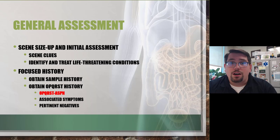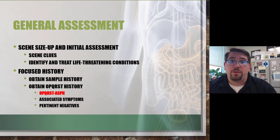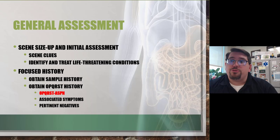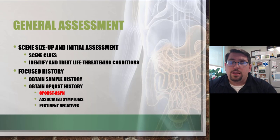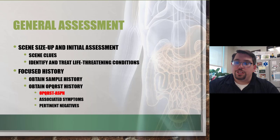If they're unresponsive, it's going to be hard to get an OPQRST ASPN — Associated Symptoms and Pertinent Negatives. We must gather history either from them or from the scene to identify what issues might be going on. That includes looking at emesis, understanding their bowel movements and history. For female patients, it may be related to a gynecological issue or their menstrual cycle.